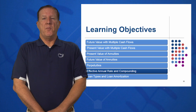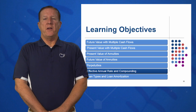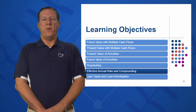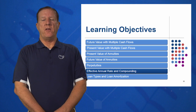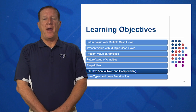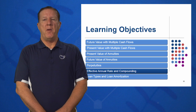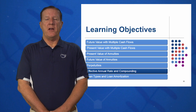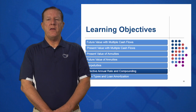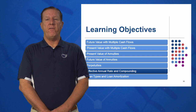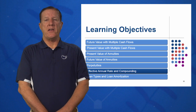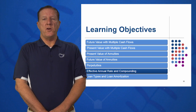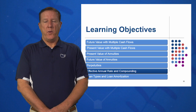In learning objective number six, we're going to look at EAR. What happens when we get a credit card and it says on the back of our credit card statement 'compounded monthly,' 'interest compounded daily,' 'compounded quarterly'? We know right away that we have to calculate the EAR — effective annual rate — and we're going to show you the equation with which we can do that.